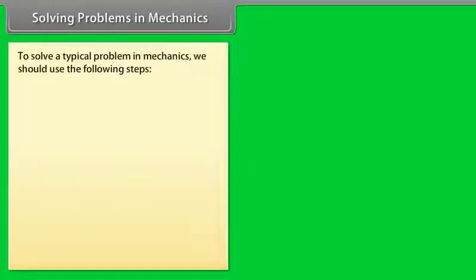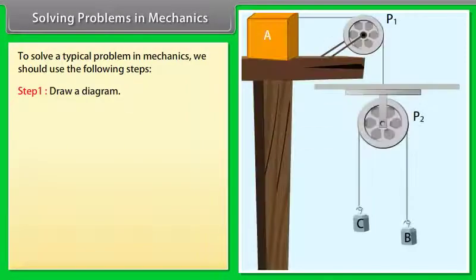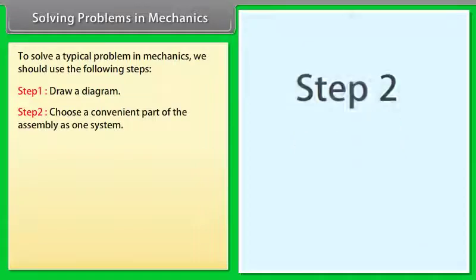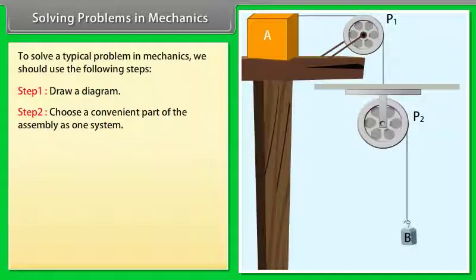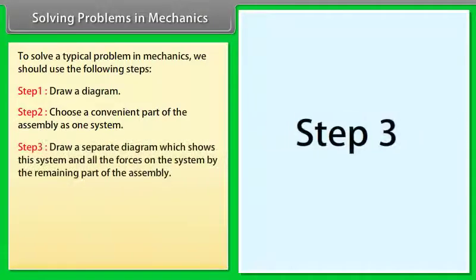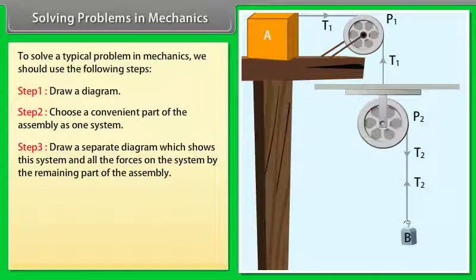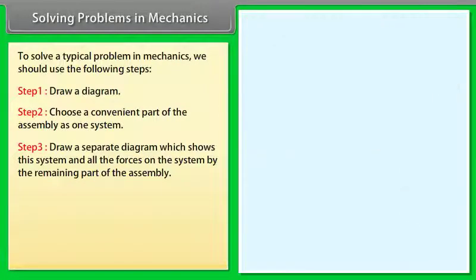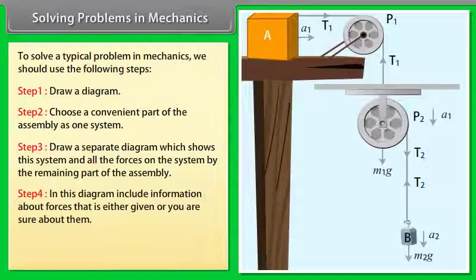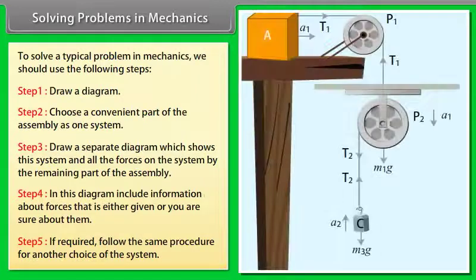Solving Problems in Mechanics: Step 1 — Draw a diagram. Step 2 — Choose a convenient part of the assembly as the system. Step 3 — Draw a separate diagram showing this system and all forces on it from the remaining assembly. Step 4 — Include information about forces, either given or known. Step 5 — If required, follow the same procedure for another choice of system.